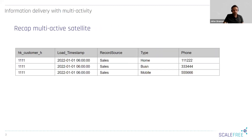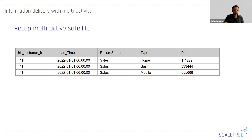Let's quickly recap how a multi-active satellite is structured. We use a multi-active satellite when there's more than one record active at the same time for one business key. Compared to a standard satellite, we need an additional attribute — an additional key — to make each record unique within the satellite.